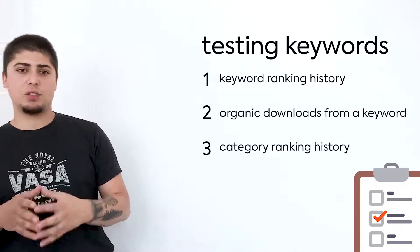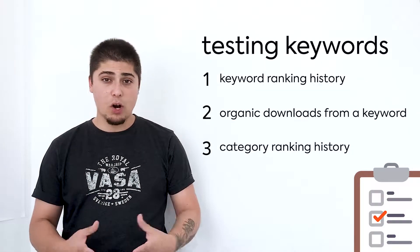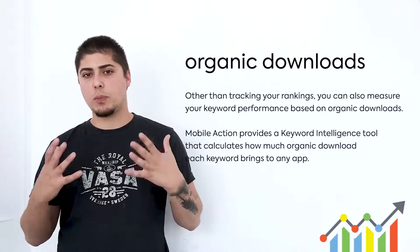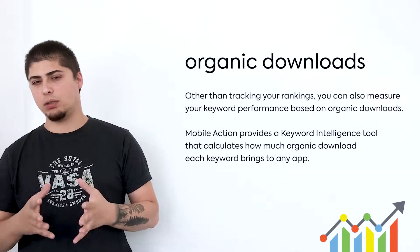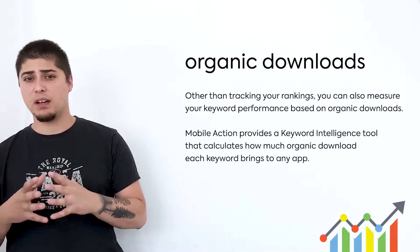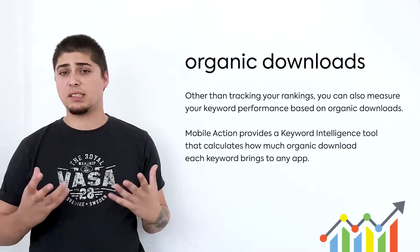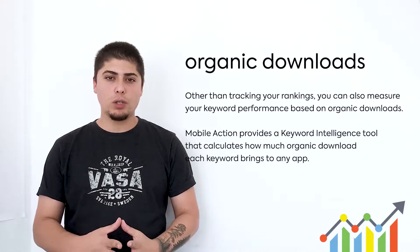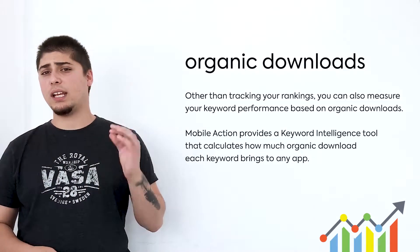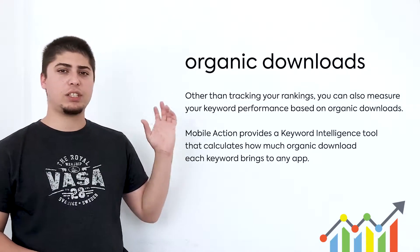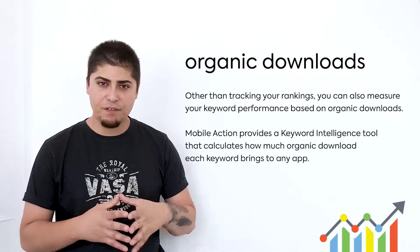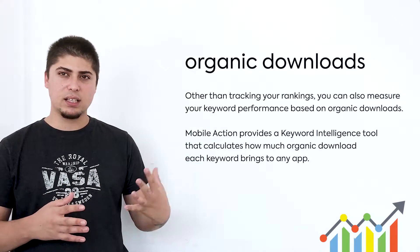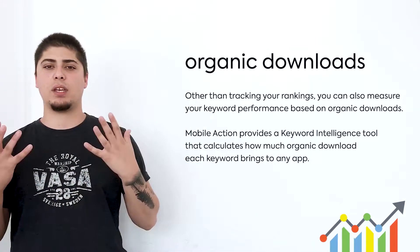Another way to track your performance on each keyword is organic installs per keyword. You will usually need at least a premium level access to the various ASO tools out there, but it is a huge time saver. It will show you how much of your organic installs come from which keyword, so if the new keywords you started to focus on start popping up on that list, it means you're doing something correct.